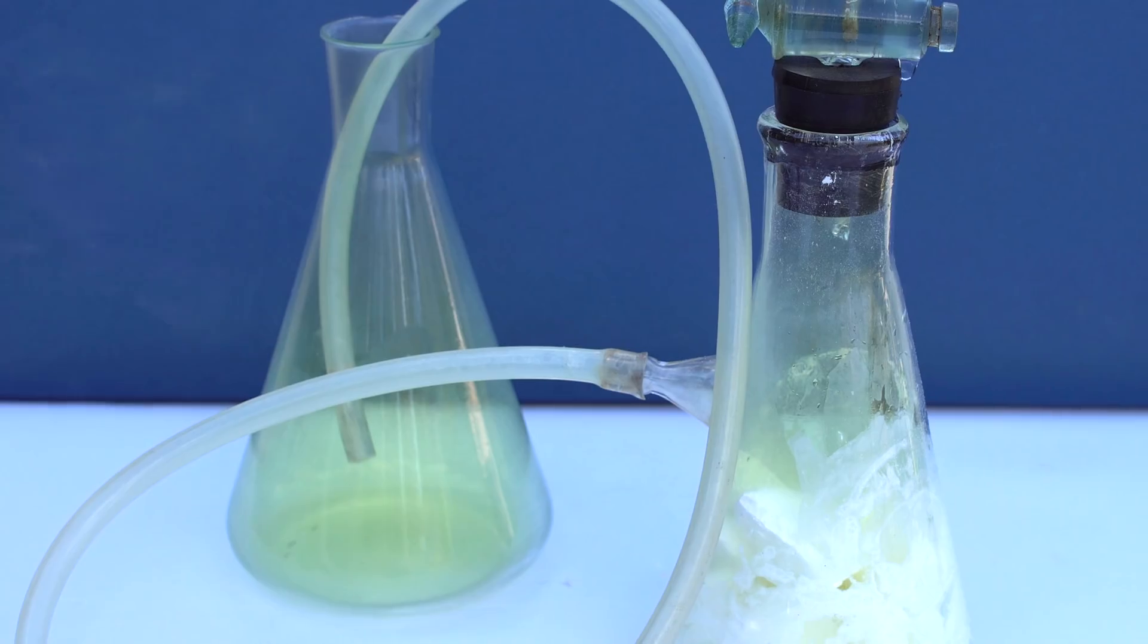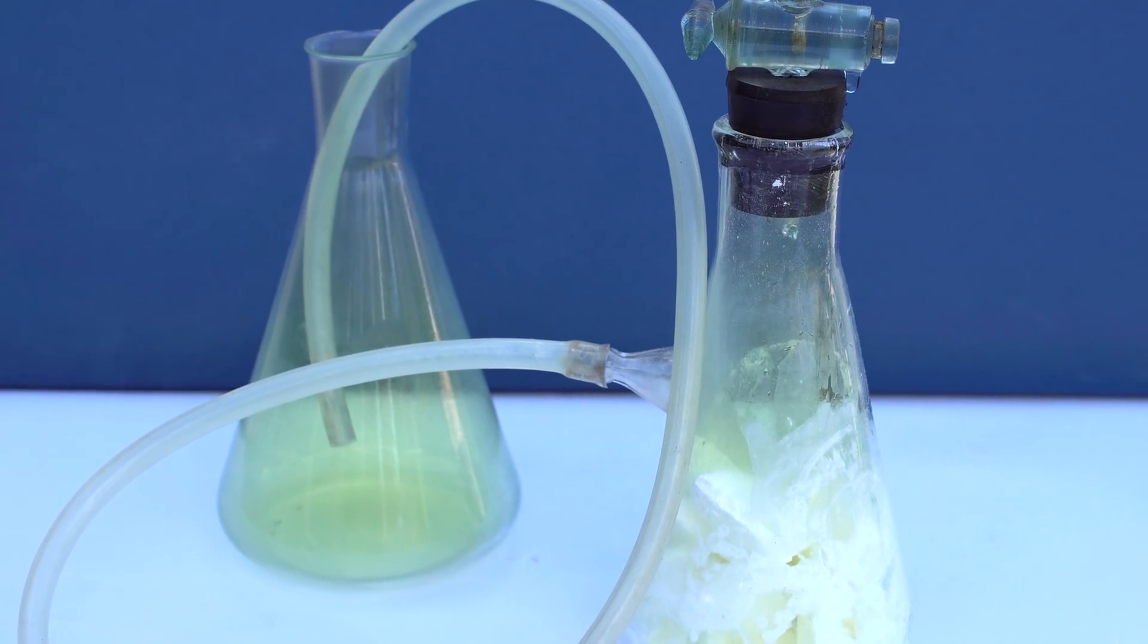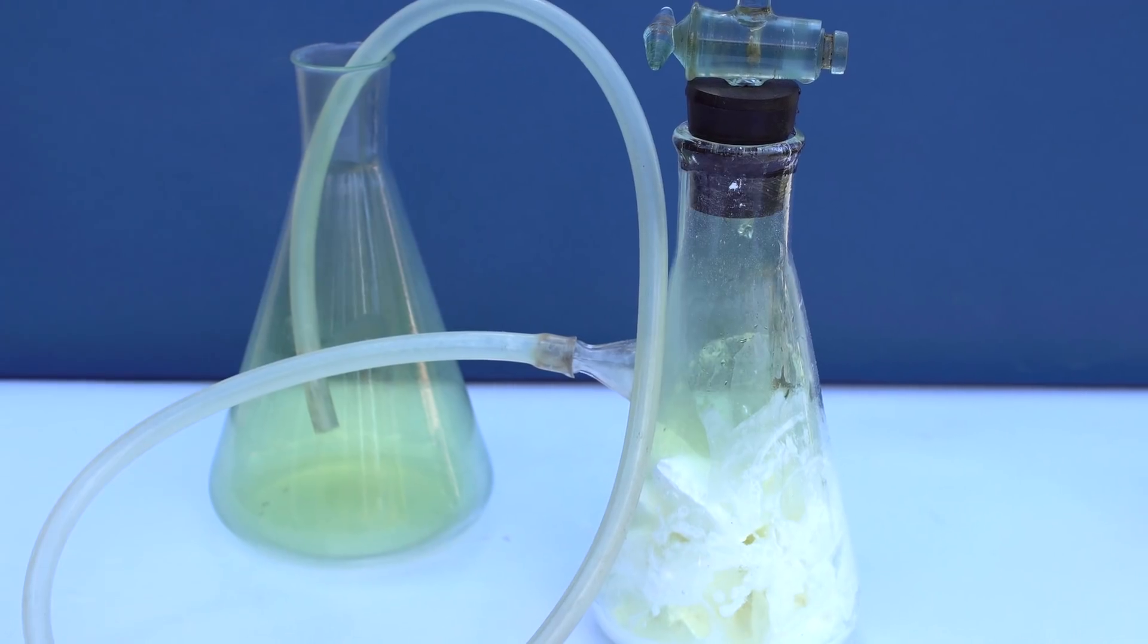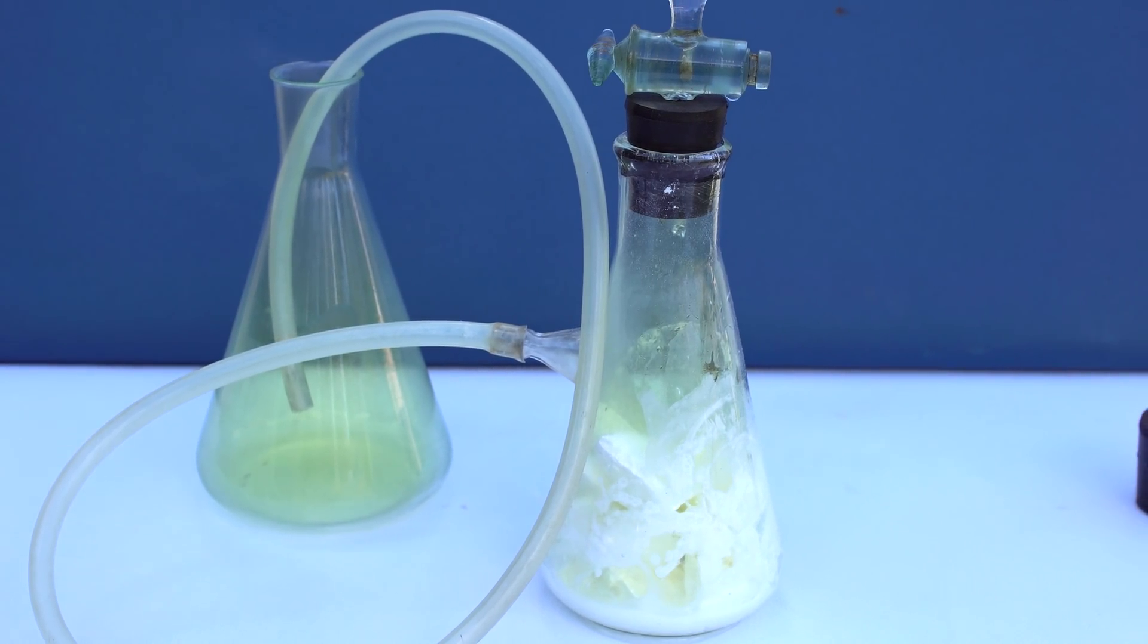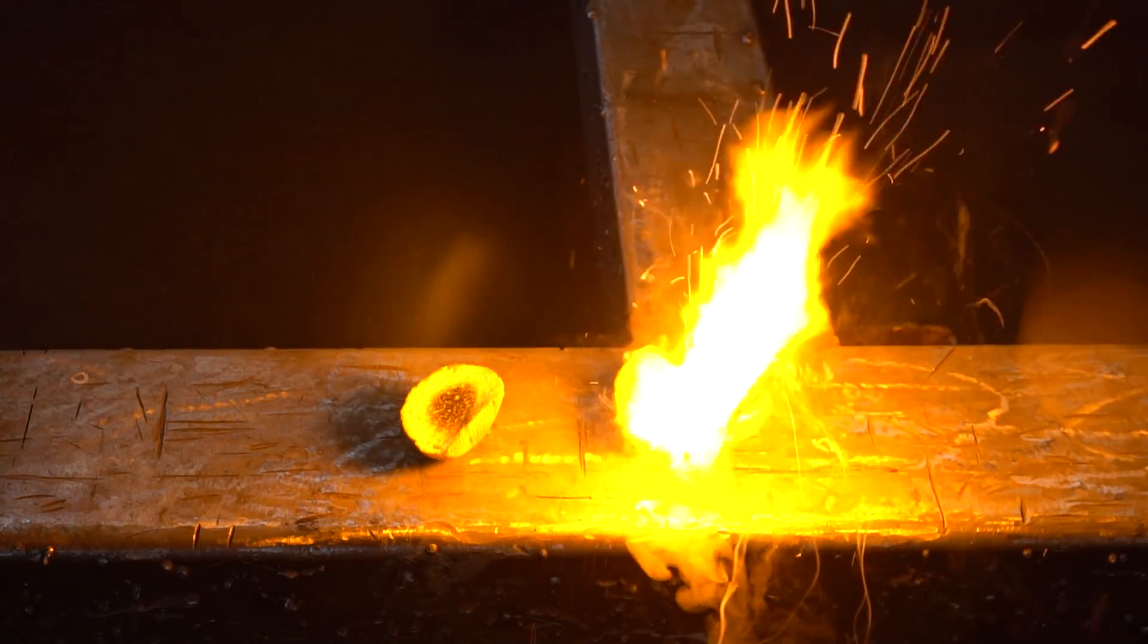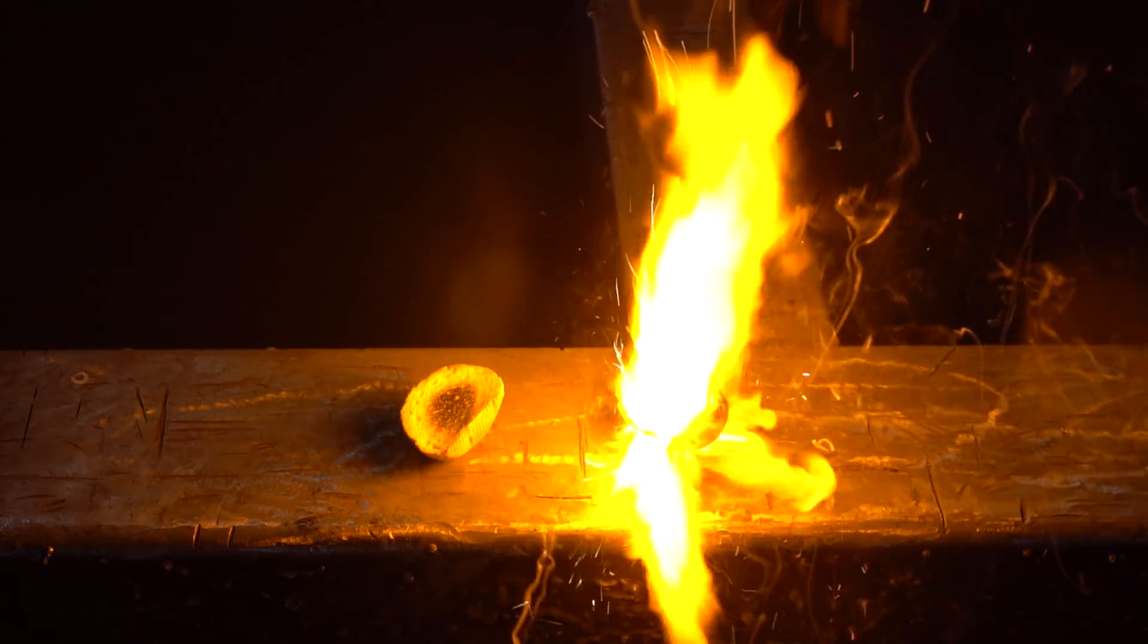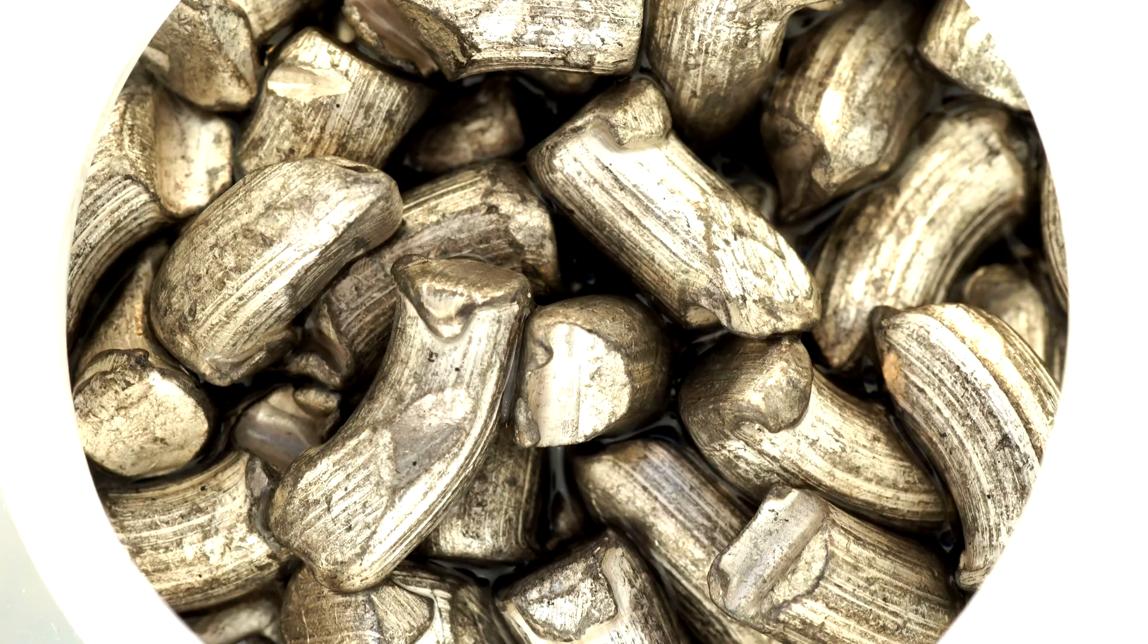After filling out the flask with chlorine, we can now observe which properties this gas possesses. From the chemical point of view, chlorine is a powerful oxidizer, that is, it can easily take away electrons from certain substances, for example, metallic lithium.